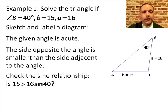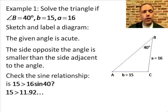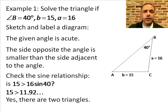The next thing I notice is the side opposite that angle is smaller than the side adjacent to the angle, so I want to check out that sine relationship to see if I actually have two triangles. So is 15, the side opposite the given angle, bigger than the adjacent side 16 times sine of the angle? Pull out the calculator, check 16 sine 40, and we get about 11.92. So yes, 15 is bigger than that, so there are two triangles in this problem.